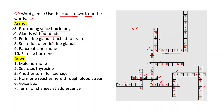Pancreatic hormone — which hormone is produced by the pancreas? That is insulin, I-N-S-U-L-I-N. Female hormone — estrogen, E-S-T-R-O-G-E-N.